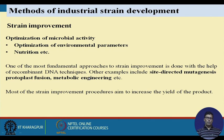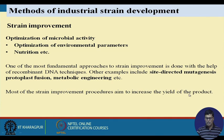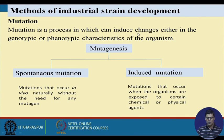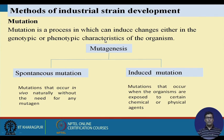Other approaches include site-directed mutagenesis, protoplast fusion, and metabolic engineering. Metabolic engineering plays a very important role as you can modify metabolic pathways to obtain the desired amount of product. Most strain improvement procedures aim to increase the yield of product. Mutation is a well-known technique used in industry — it is the process that induces changes in either the genotype or phenotype characteristics of the organism.